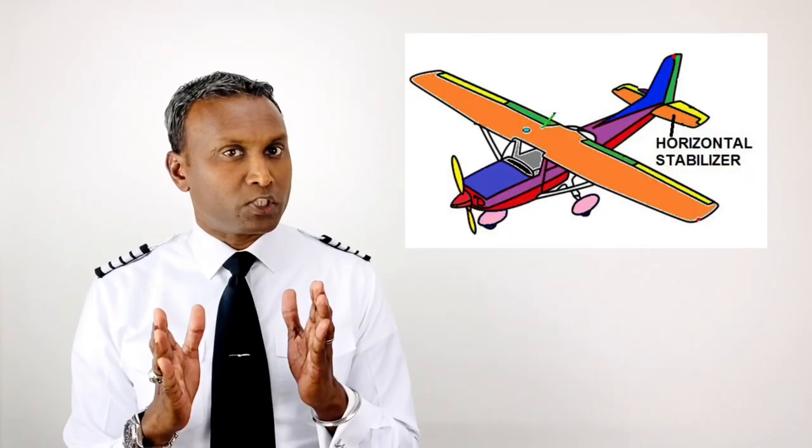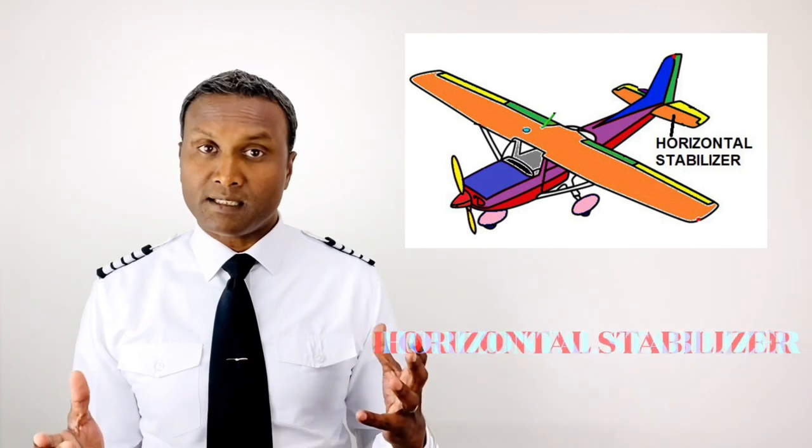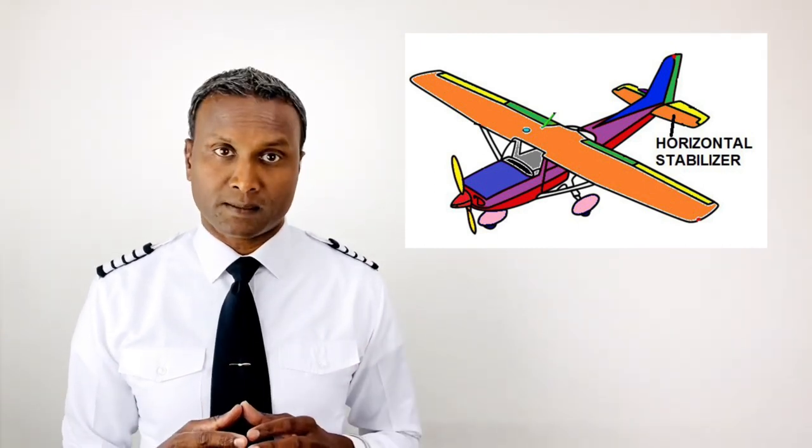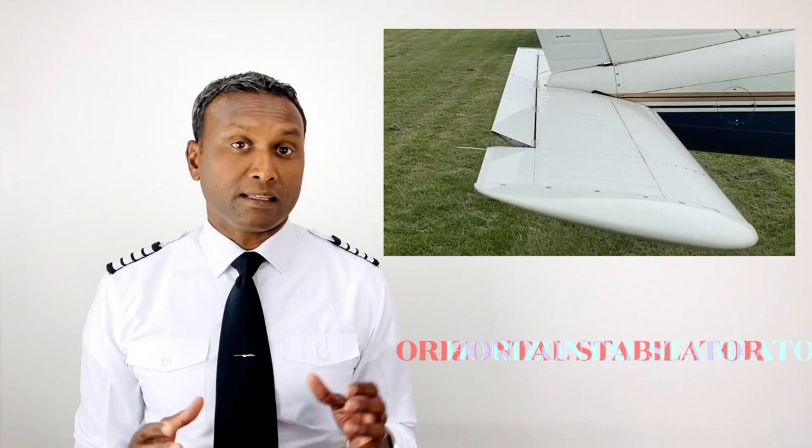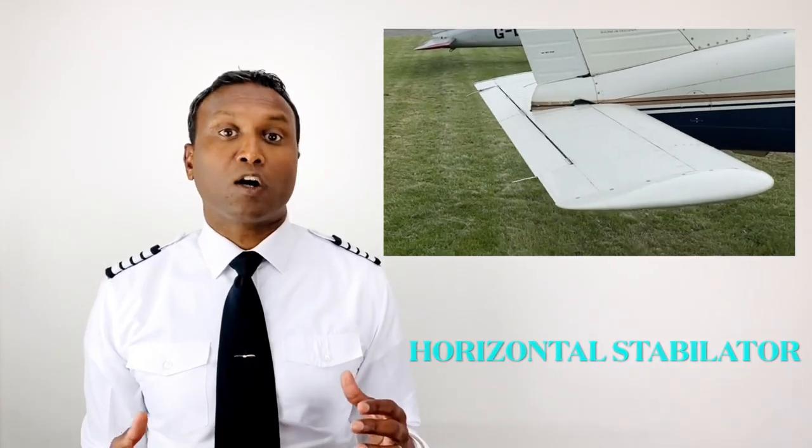Towards the rear of the fuselage in most aircraft designs, we see what appears to be a smaller version of the wings. These are called horizontal stabilizers. As the name suggests, these offer horizontal stability to the aircraft. The horizontal stabilizers, much like the wings, are fixed to the fuselage and do not move. However, there are aircraft designs where the whole horizontal stabilizer fully moves — in this case they are called an all-moving tail.